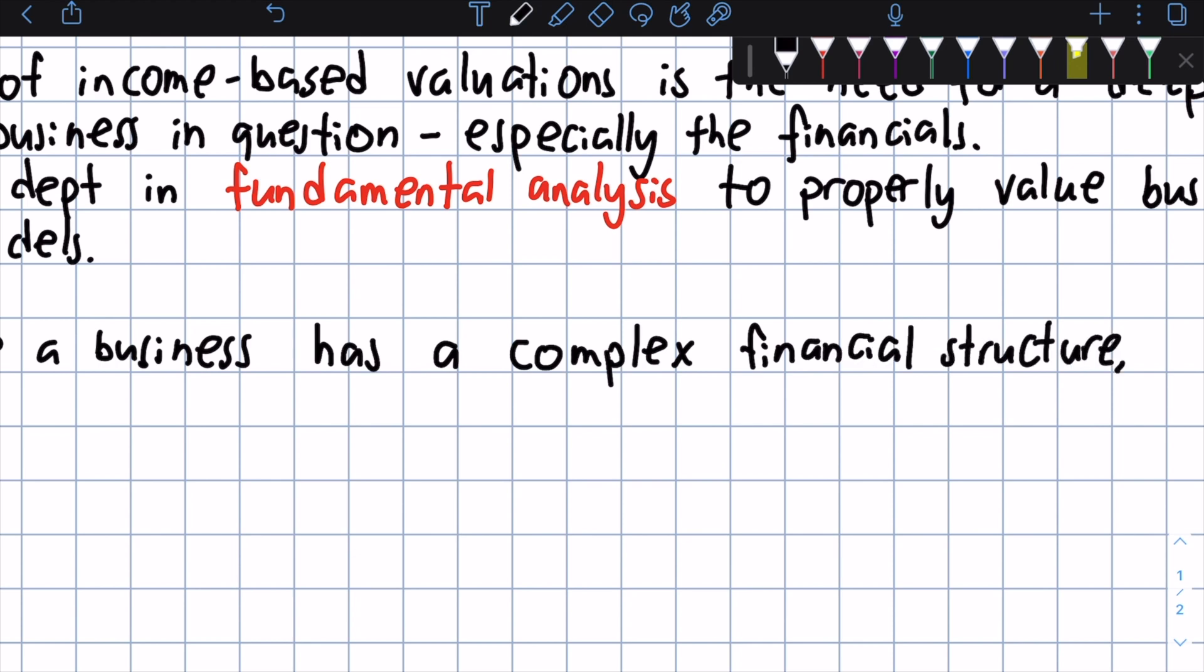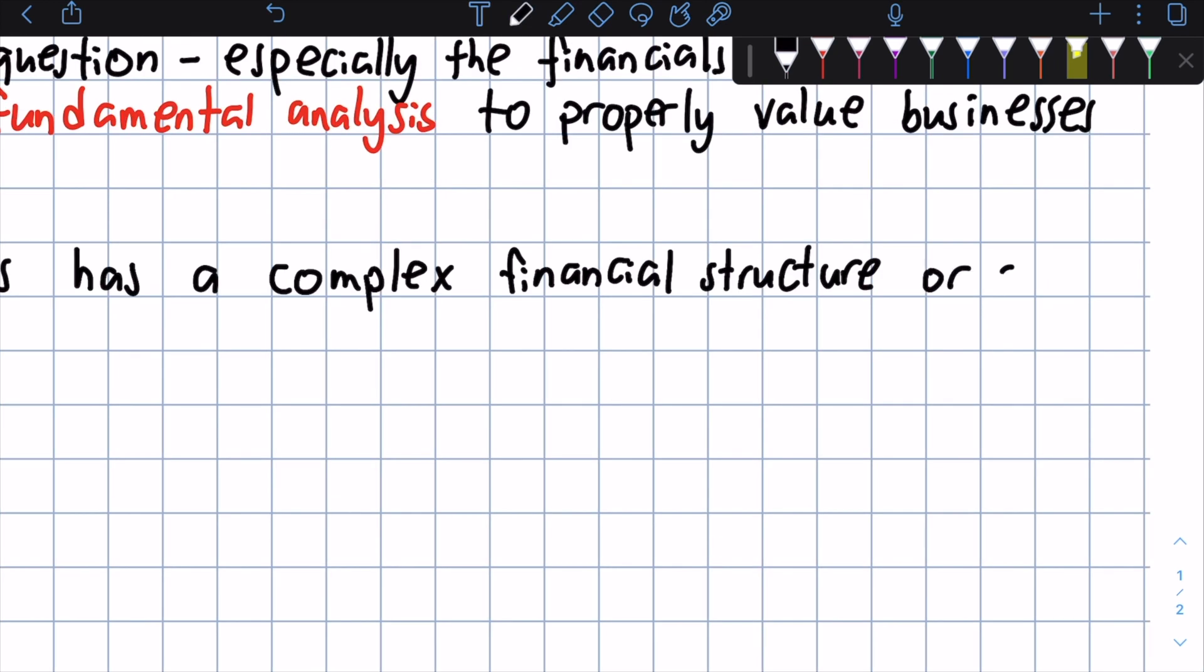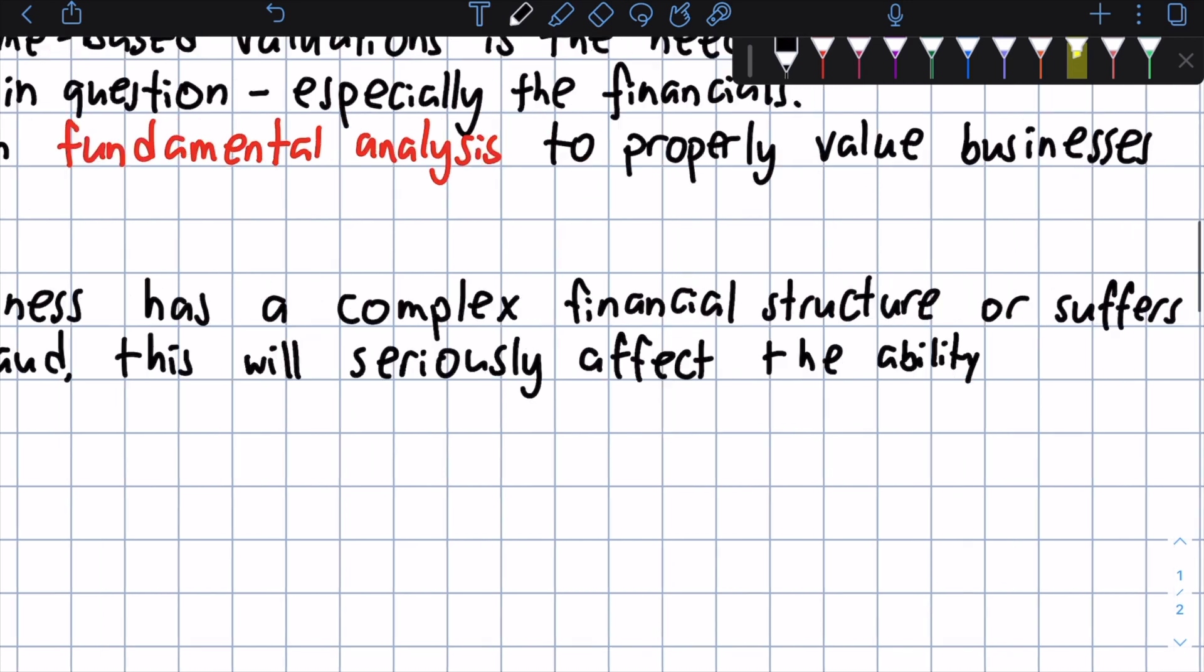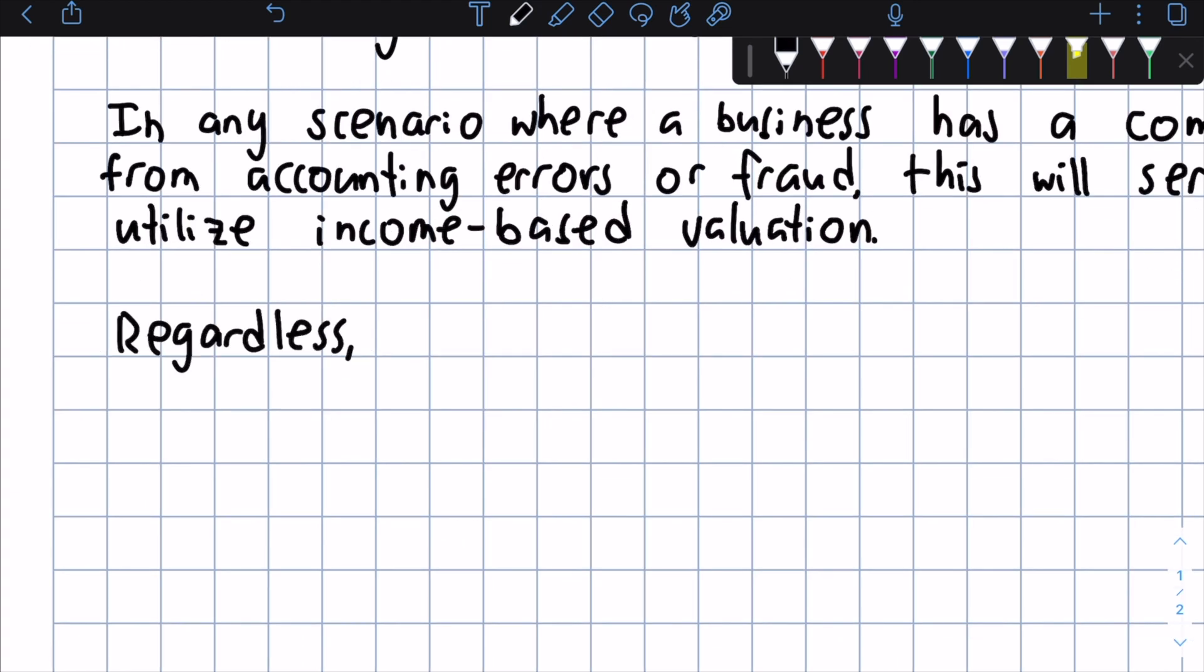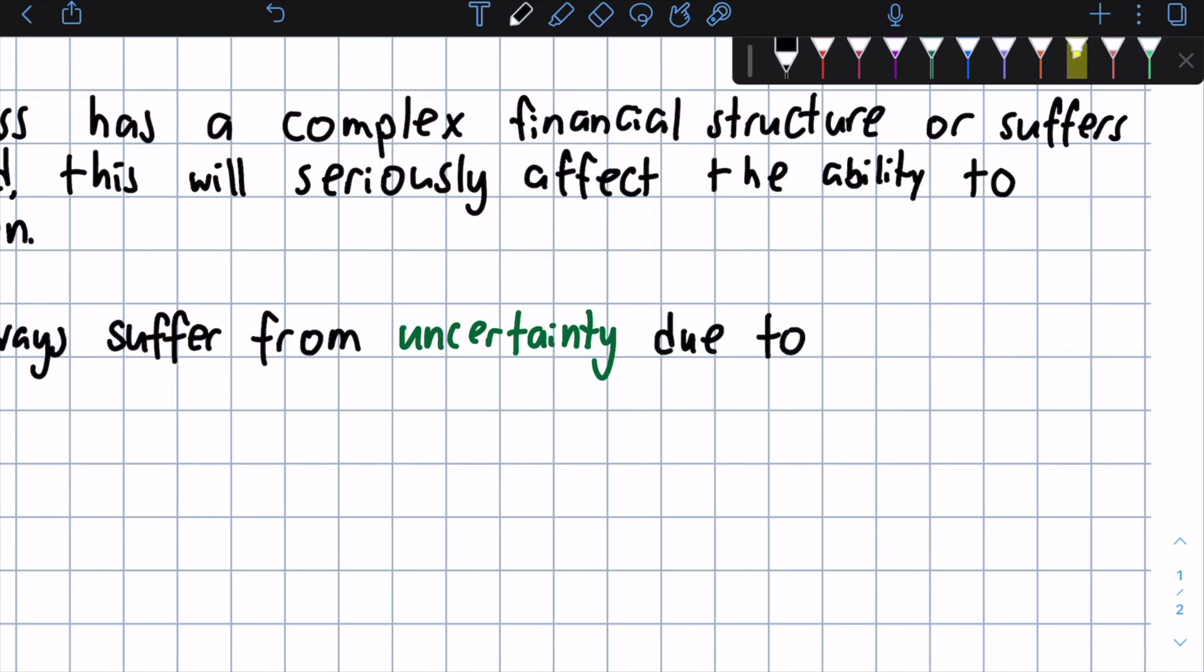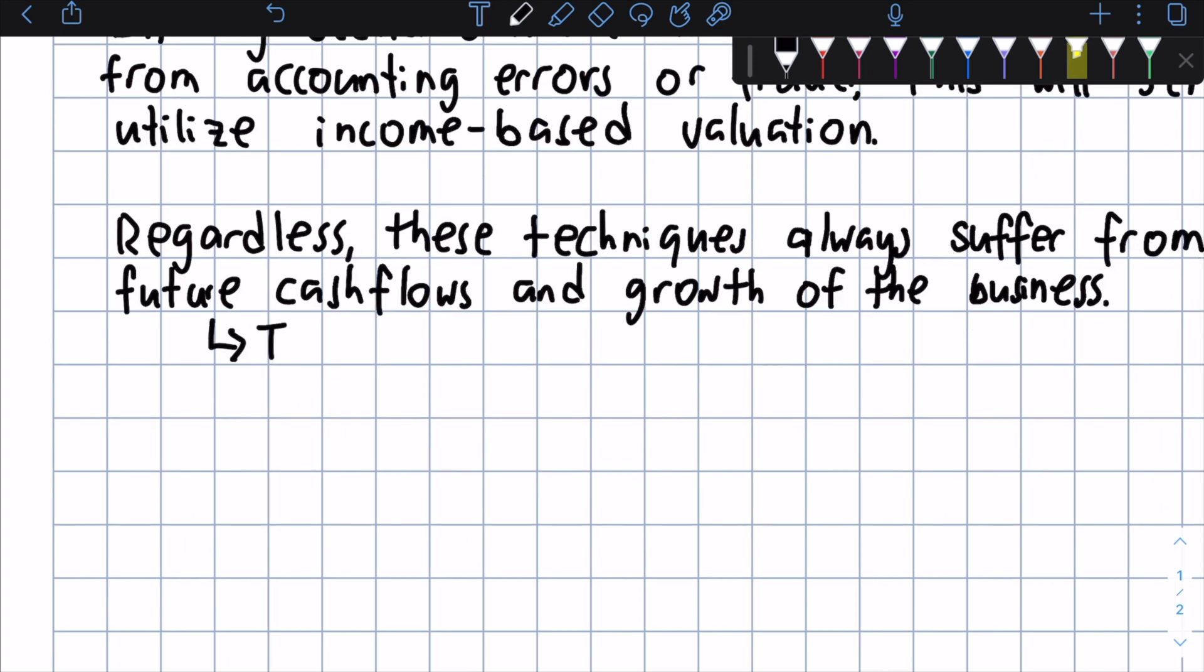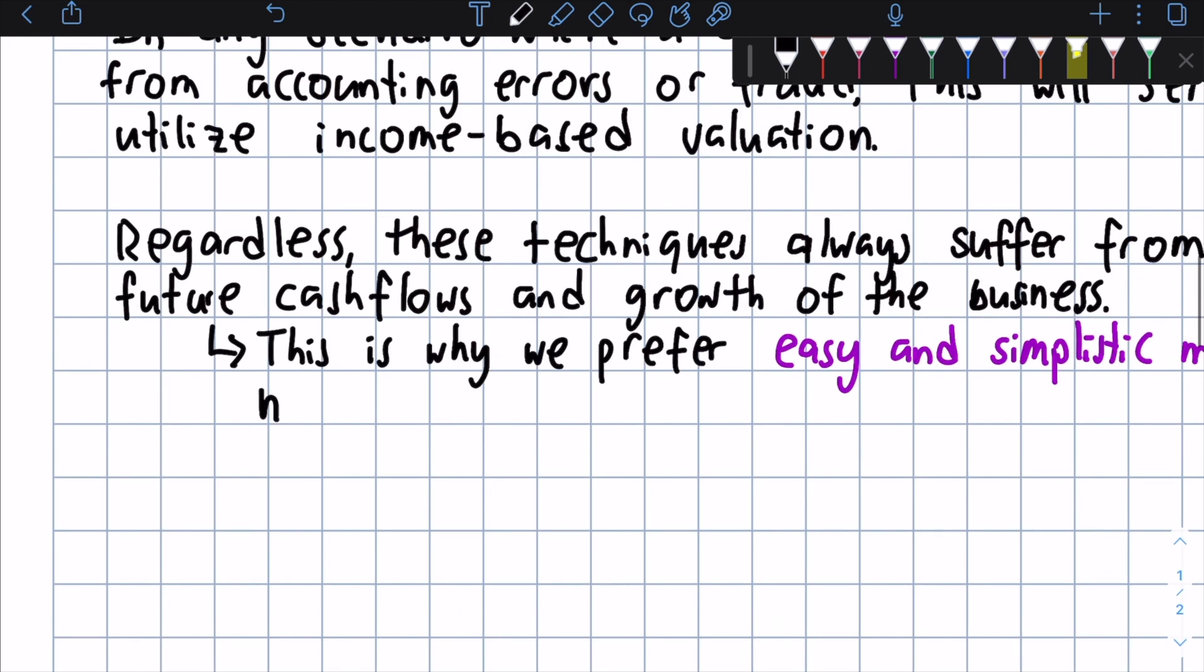In any scenario where a business has a complex financial structure, or one where it suffers from accounting errors or fraud, such as Enron, this will seriously affect the ability to utilize income-based valuation, and these valuations will likely be incorrect in many cases. Regardless of this, these techniques always suffer from uncertainty, and this is just inherent due to the estimation of future cash flows and the growth of the business that's unknown at the current time. This is why we prefer easy and more simplistic models like the ones we've mentioned, and why we try to limit the number of variables we use in the models, or else it becomes more like a black box.